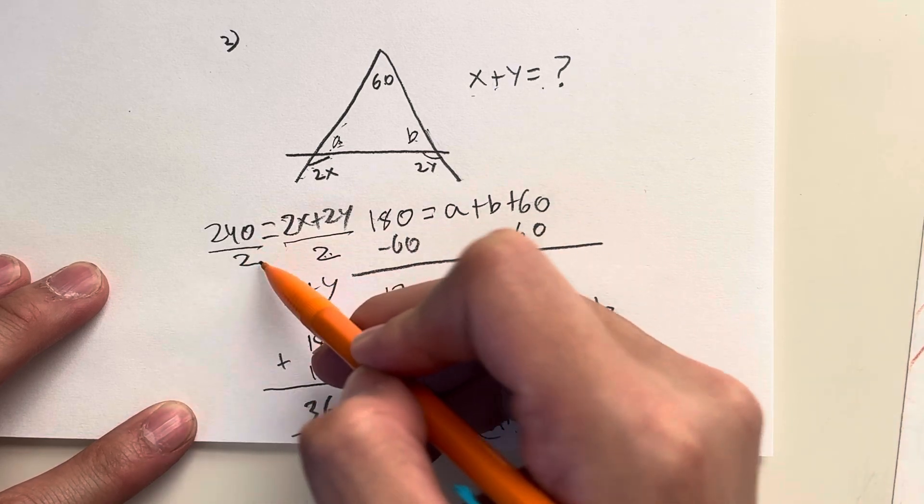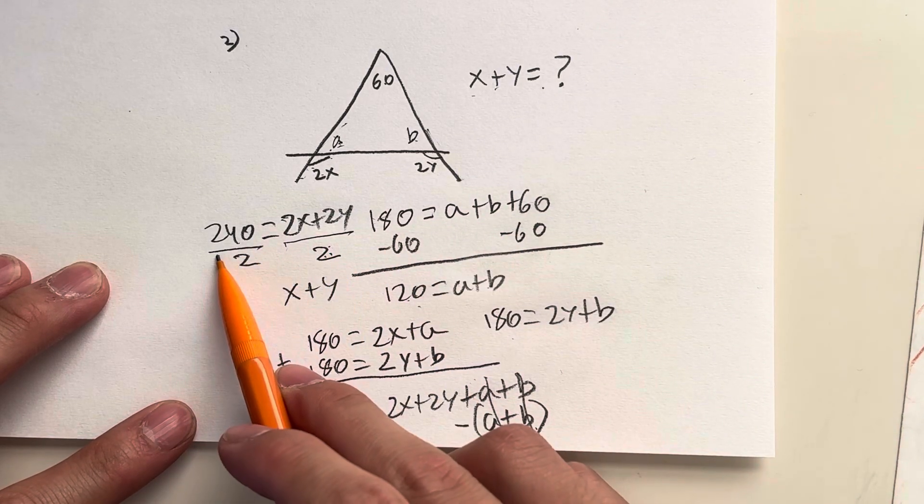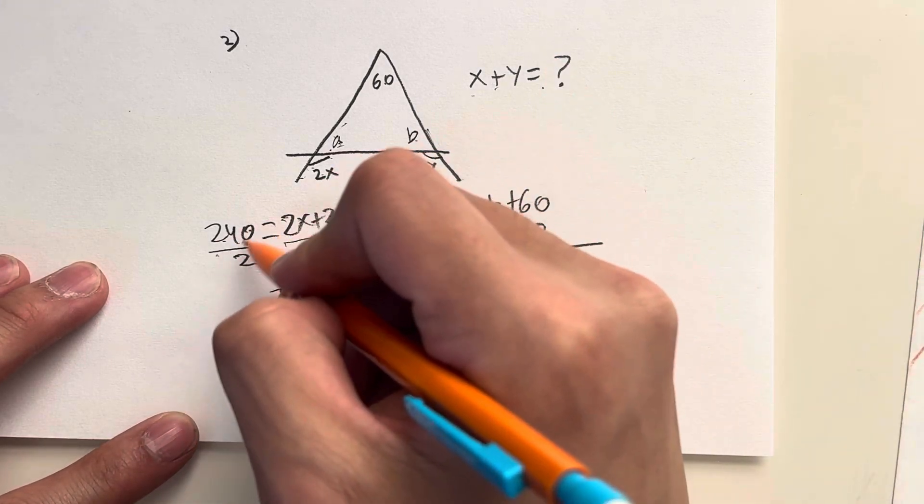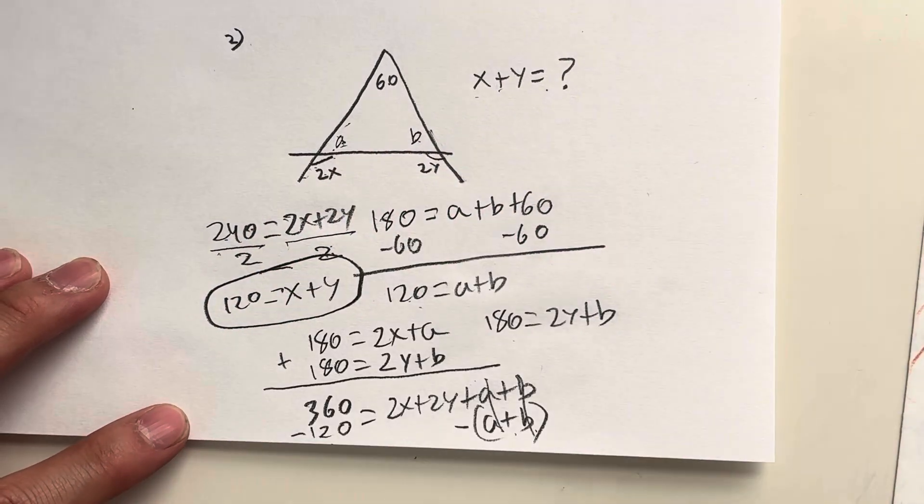That's all equal to 240 divided by 2 because whatever I do on the right side I have to do on the left side. And that's just equal to 240 divided by 2 which is 120. And that right there is your answer.